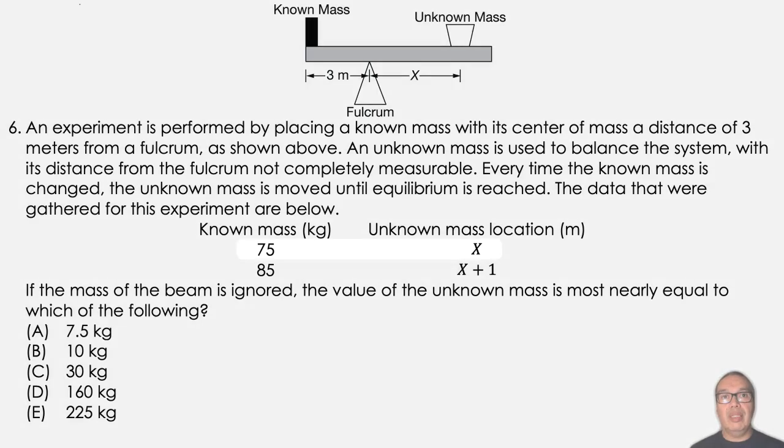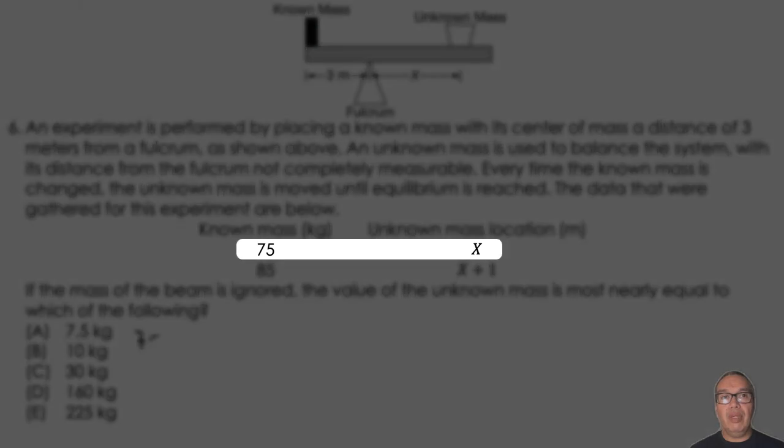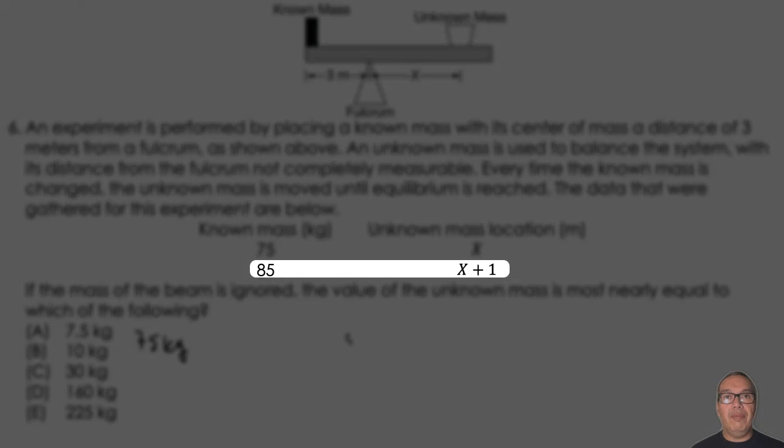For a known mass of 75 kilograms, the location of the unknown mass is x meters, and for a known mass of 85 kilograms, it is x plus 1 meters.